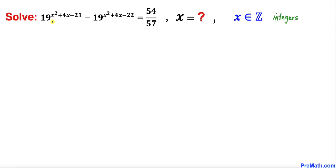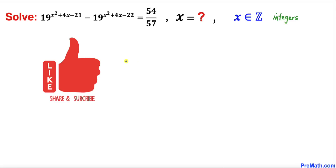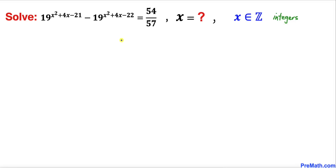Welcome to pre-math. In this video we are going to solve this given exponential equation: 19 to the power of (x squared plus 4x minus 21) minus 19 to the power of (x squared plus 4x minus 22) equals 54 divided by 57, where x are integers. Please don't forget to give a thumbs up and subscribe. Let's go ahead and get started with the solution.